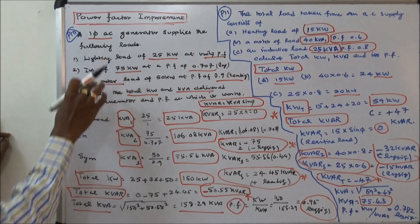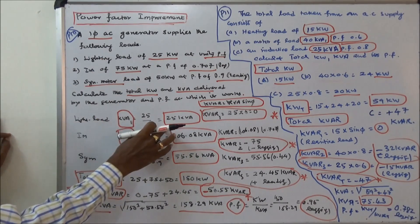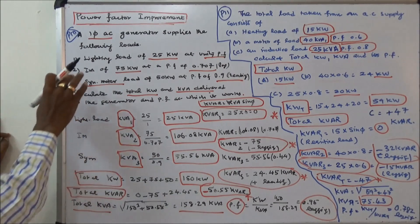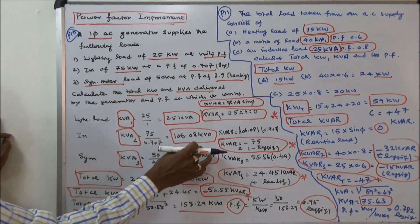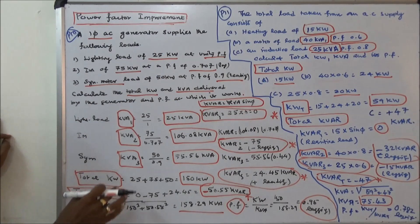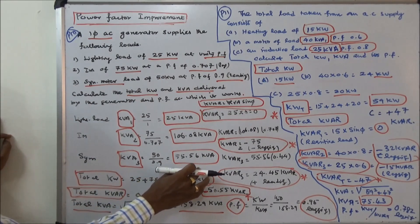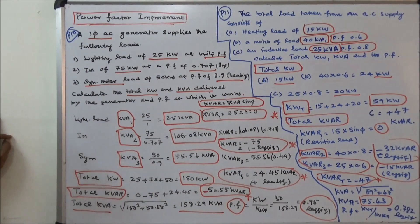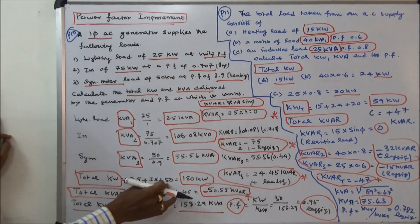The first is a resistive load with power factor 1, therefore kVA1 is equal to 25. Second case, induction motor: kVA2 is equal to 106.08 kVA, power factor is given. Third is the synchronous motor with power factor 0.9: kVA3 is equal to 55.56 kVA. The total kW is equal to 25 plus 75 plus 50, that is equal to 150 kW.